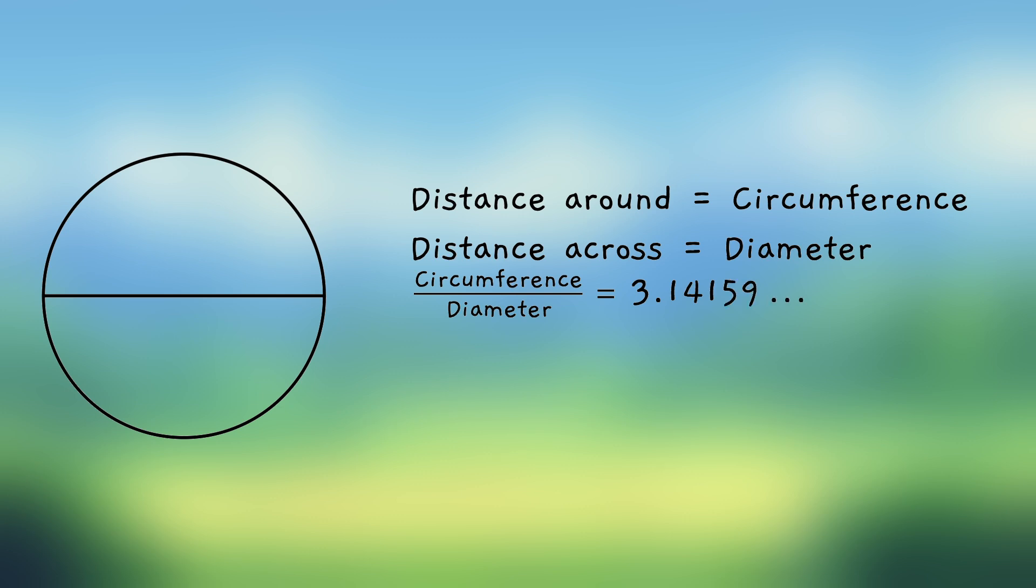The number does continue, but this is a very good approximation. This number from geometry is so common in all areas of math and science that it has a name. Its name was given to it hundreds of years ago. And that is pi.